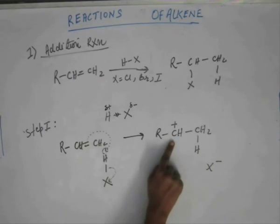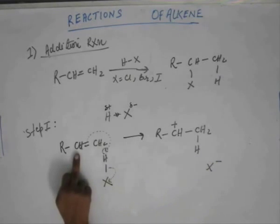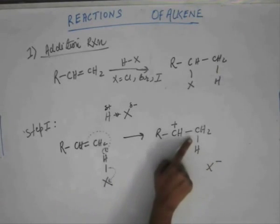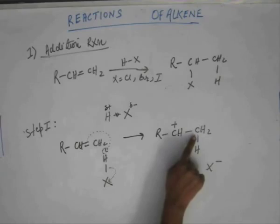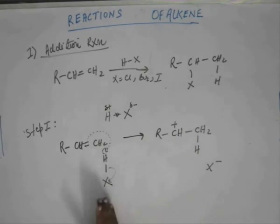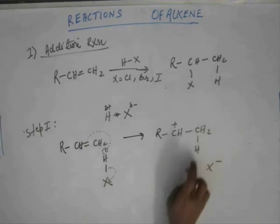This carbon, being a 2° carbon with a higher number of hyperconjugating structures, is more stable than what would have been formed if hydrogen had attached to the other carbon leaving a 1° carbocation. The plus charge on a 1° carbon would be less stable. So the positive charge preferably forms on the inner carbon, and hydrogen preferably attaches to the outer carbon. That is why we show hydrogen on the outer carbon.